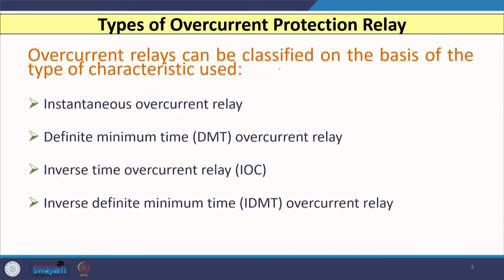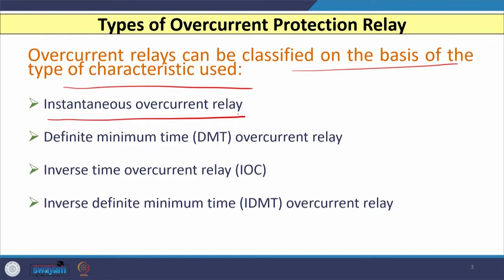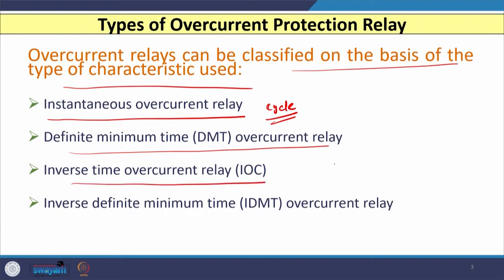Overcurrent relays can be classified based on the type of characteristic used. Basically four classifications are available. The first is based on time of operation: instantaneous overcurrent relays, which operate instantaneously — though no such relay exists in the actual field that operates instantaneously, so any relay that operates within one cycle is treated as instantaneous. The second type is the definite minimum time overcurrent relay. The third is the inverse time overcurrent relay, and the fourth is the inverse definite minimum time (IDMT) overcurrent relay.